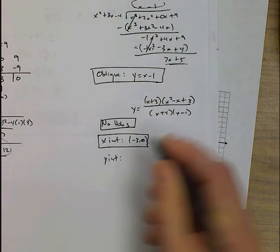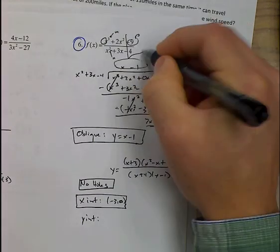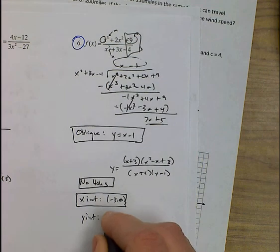The y-intercept, of course, go back to the original problem. Plug in 0 for x's. So it's just going to be this right here, which is just 9 over negative 4.